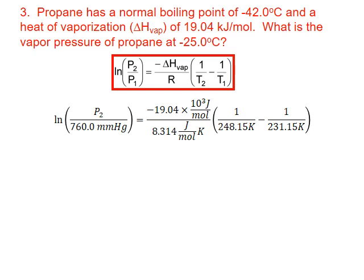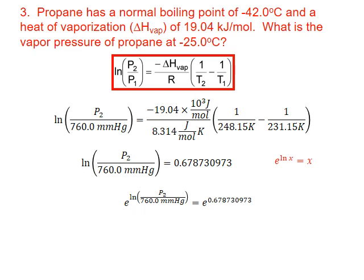We want to simplify this as much as we can. On the right-hand side, all of the math simplifies to give us 0.678730973 — make sure you follow the correct order of operations on your calculator. On the left-hand side, we need to get rid of the natural log by raising everything to the base e. Remember that the natural log of x raised to the base e is simply x. This cancels the natural log on the left-hand side, leaving P2 divided by 760 equal to e raised to the 0.678730973 exponent, which gives us 1.971374.